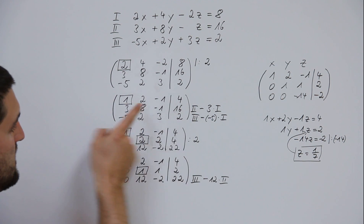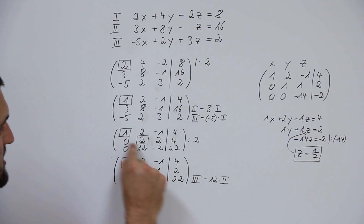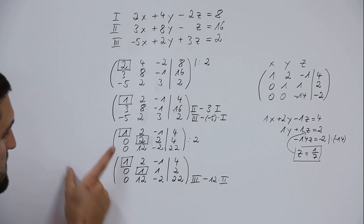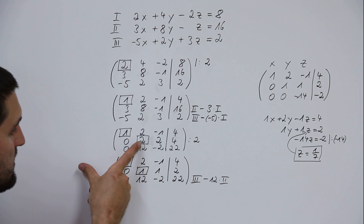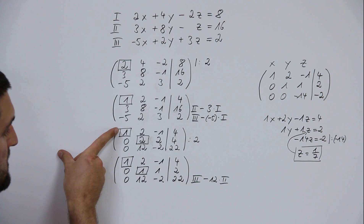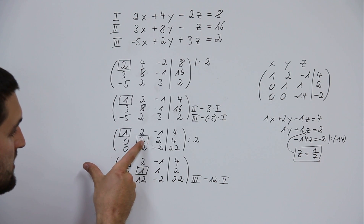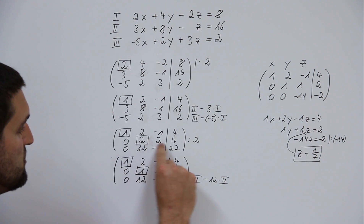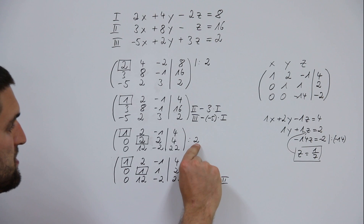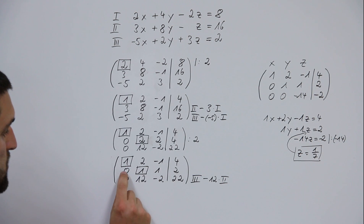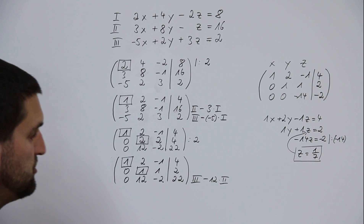Then the pivot element moves one down and one right. The whole line two must now be divided through the new pivot element. The new line two becomes: zero, one, one, two.